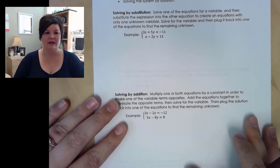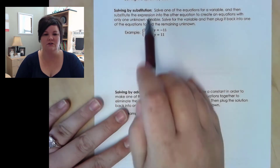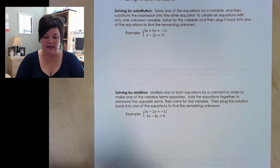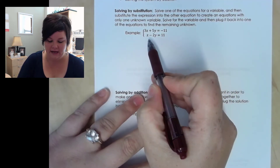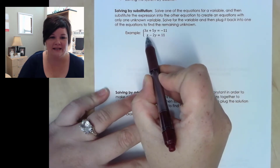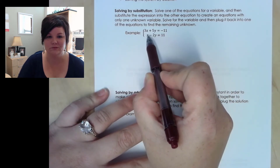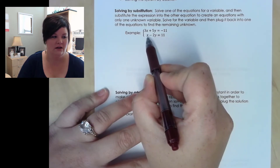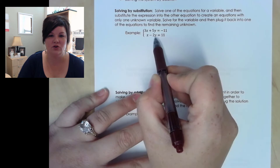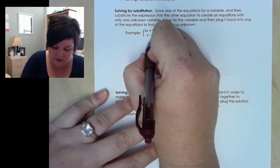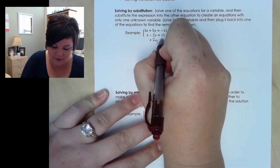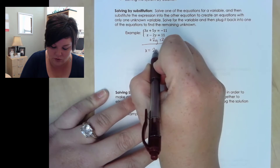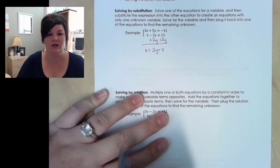Looking at solving by substitution — we want to use this when a variable has no coefficient, like here where x is all by itself. This would be really easy to solve for x; I just move the 2y term to the other side by adding 2y to both sides. So this one I can write as x equals 2y plus 11.